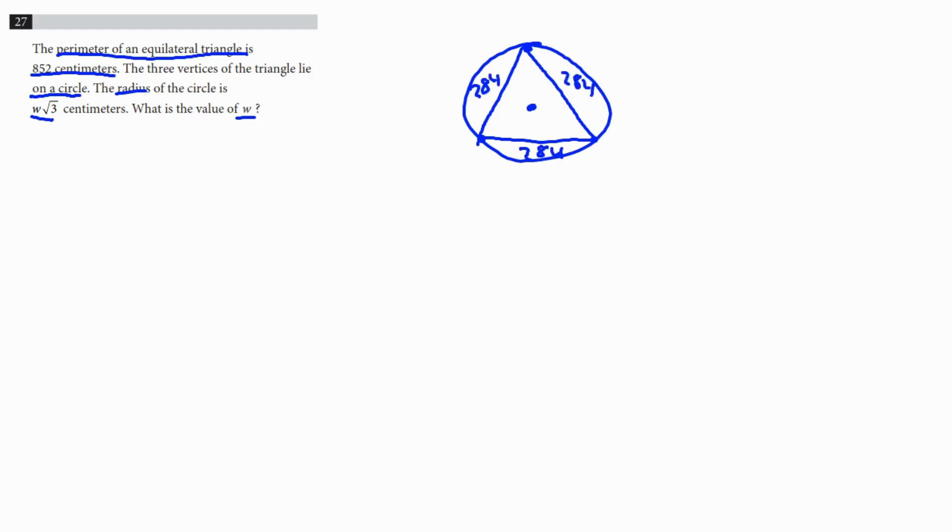And then now we need to find W. So W square root of three is the radius. The radius is basically the center to the edge of the circle. So I'm going to draw these two to form like a little triangle here, and then this is going to be W square root of three in here. And then basically what I'm going to do is I'm going to form a right triangle, and then we're going to use that to get our answer.